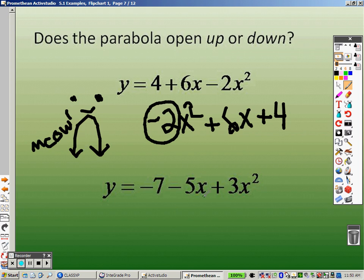Next up is writing those in order. So I've got to write this one in order. 3x squared minus 5x minus 7 when I write it in order. 3x squared, that means it's a positive out in front. So it is going up.